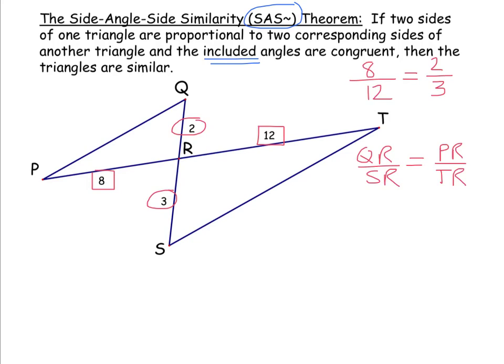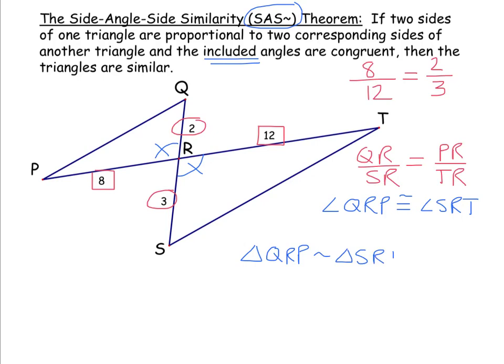We also notice vertical angles in the diagram: angle QRP is congruent to angle SRT. This congruent angle pair falls between the proportional corresponding sides — that's what's meant by an included angle in the side-angle-side similarity theorem. So triangle QRP is similar to triangle SRT, by the side-angle-side similarity theorem.